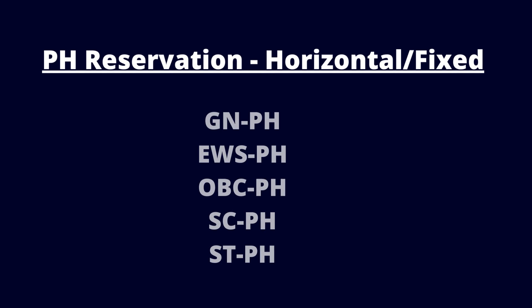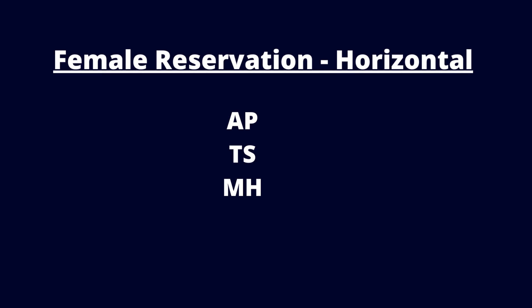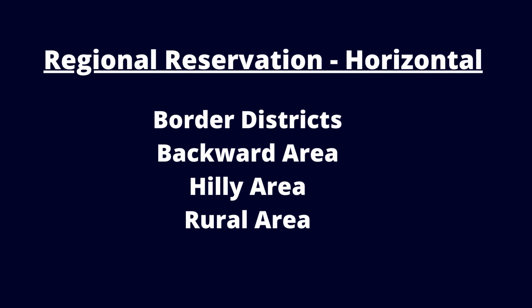Nearly all states provide reservation for the physically disabled, varying between 3% to 5% depending on the state. Few states such as Andhra Pradesh and Maharashtra provide horizontal reservation for female candidates. 33% inner reservation will be applicable for all communal reservation categories. Many states also provide reservation for students who belong to particular areas such as border districts between two states, backward districts, hilly areas, and rural areas.